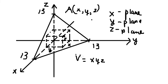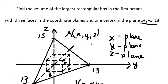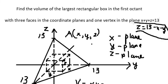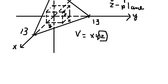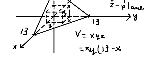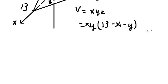Now the volume formula is V equals x times y times z. However, we have three variables, so we use the constraint. We know that z equals 13 minus x minus y, and we substitute this into the volume formula to reduce to two variables. Now we expand the expression.